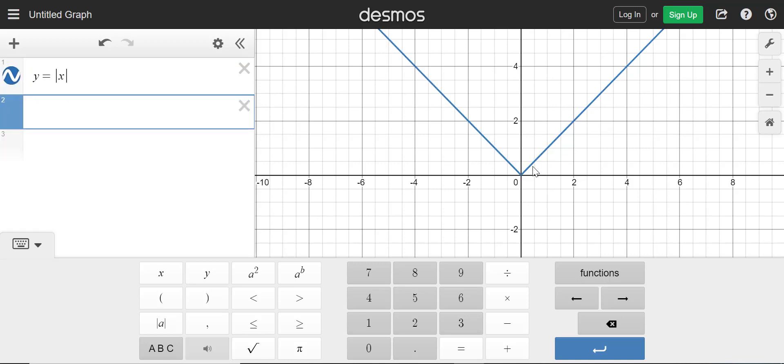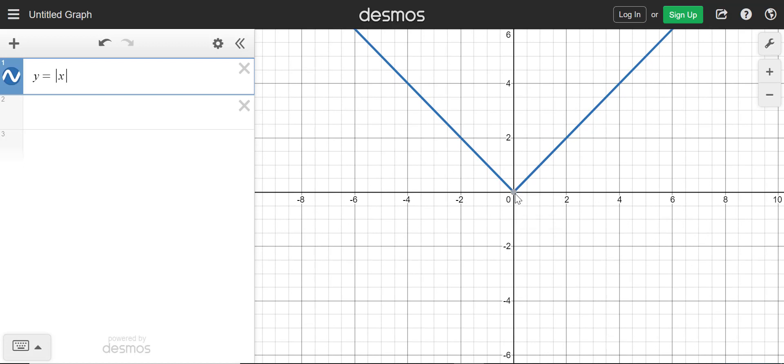And what I have here in blue is our parent function. So you can see that it's a v-shape and it's got its vertex here at 0, 0.